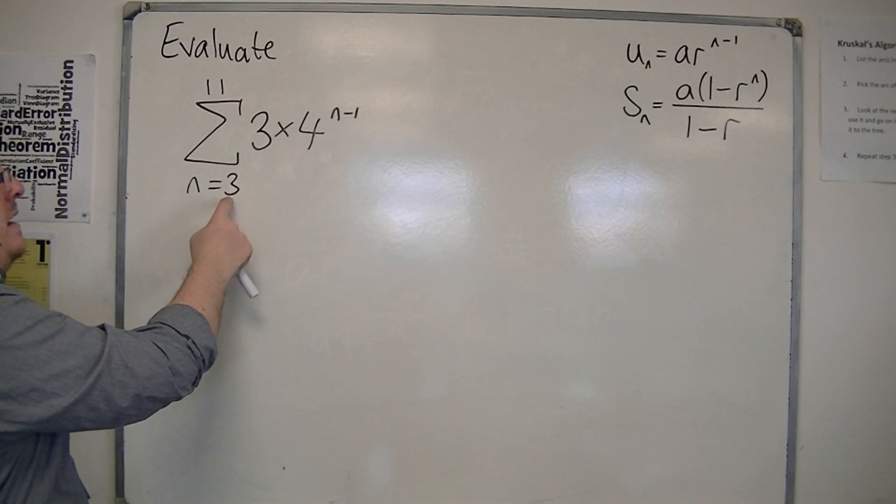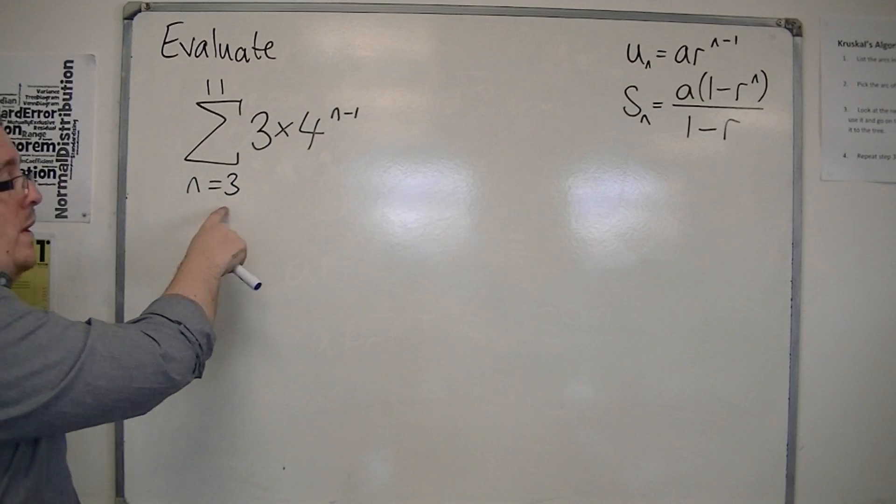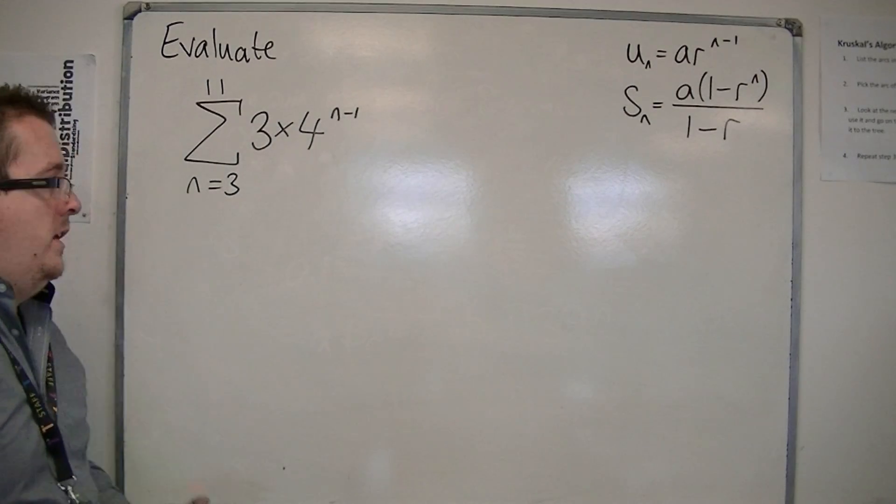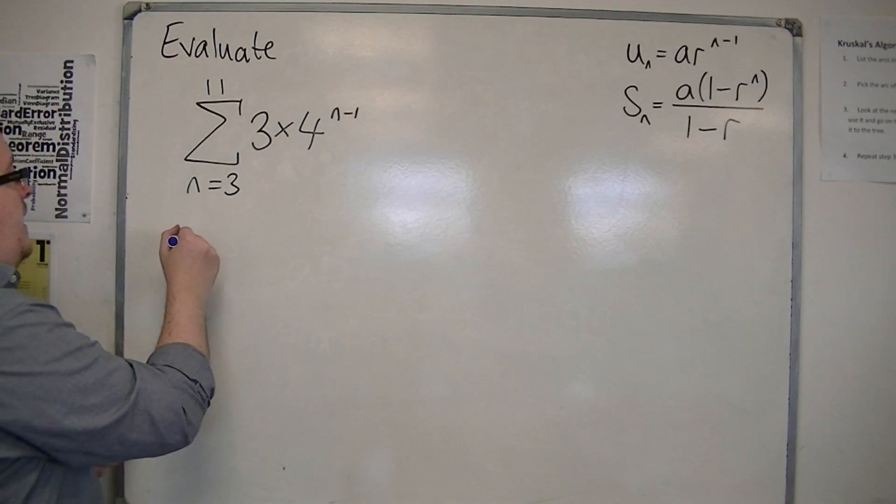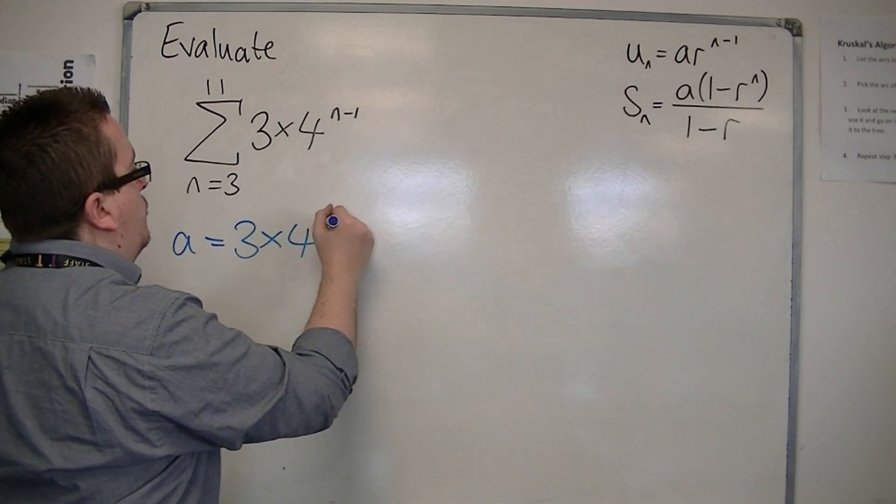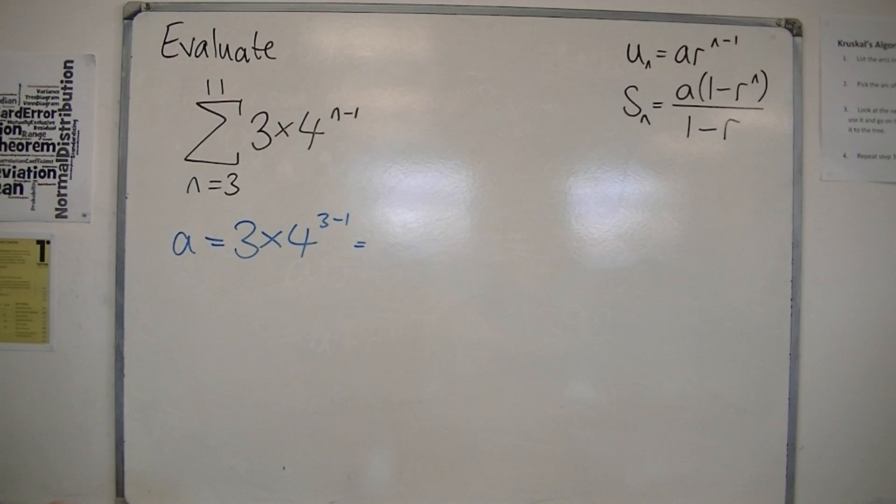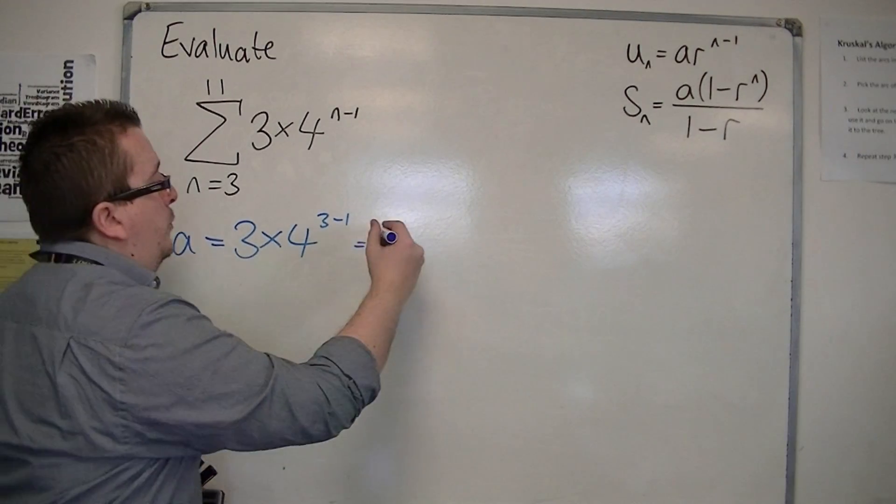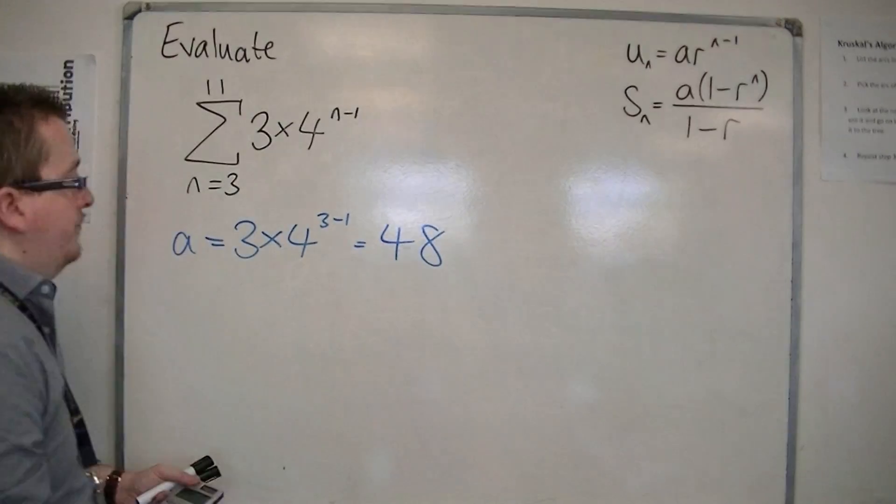Because a is not three. The first term in my sequence is when n is three. So the first term, a, is three times four to the three minus one. So three lots of sixteen, in other words, forty-eight.